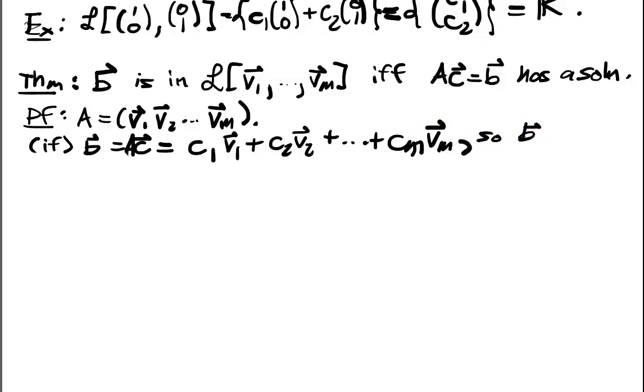And if we expand out that, then we have C1 V1 plus C2 V2 all the way up to Cm Vm. So B is in, we'll just write L here.